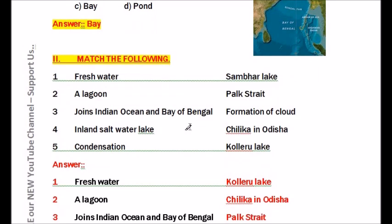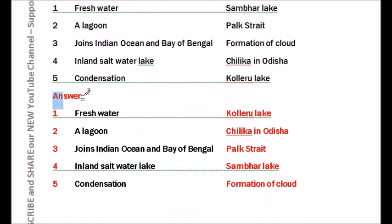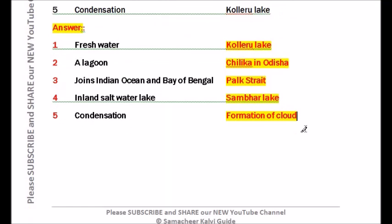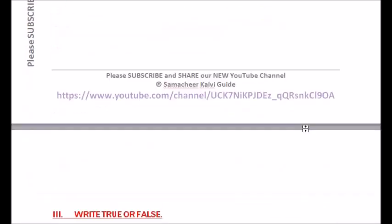Moving to Roman numeral II: Match the following. Fresh water — Kolleru Lake; Lagoon — Chilika in Odisha; Joins Indian Ocean and Bay of Bengal — Palk Strait; Inland salt water lake — Sambar Lake; Condensation — Formation of cloud.